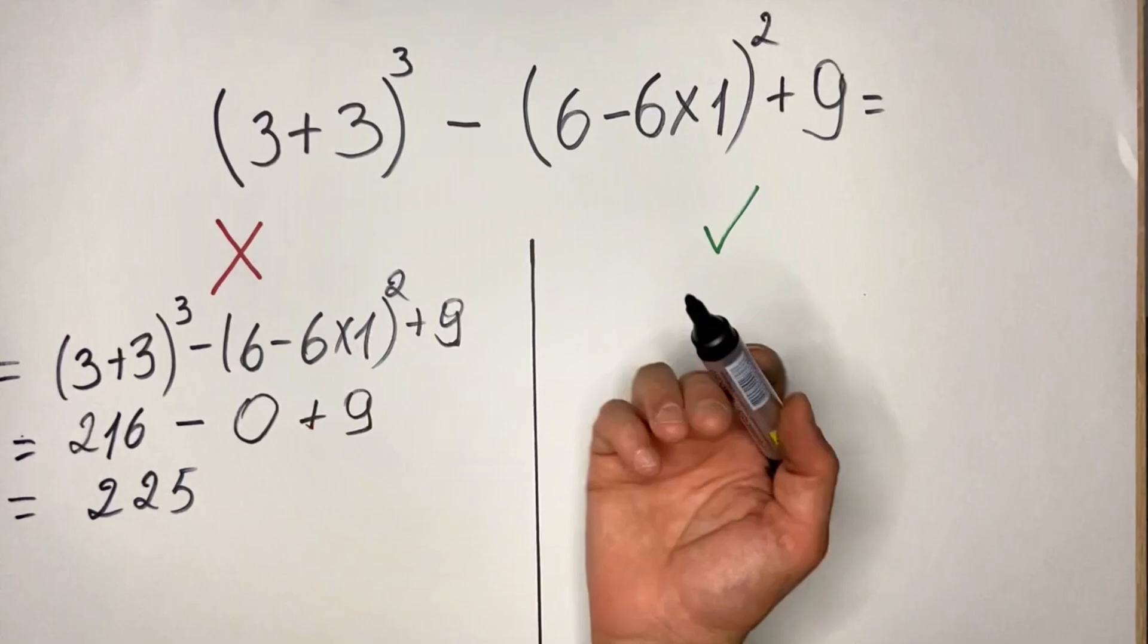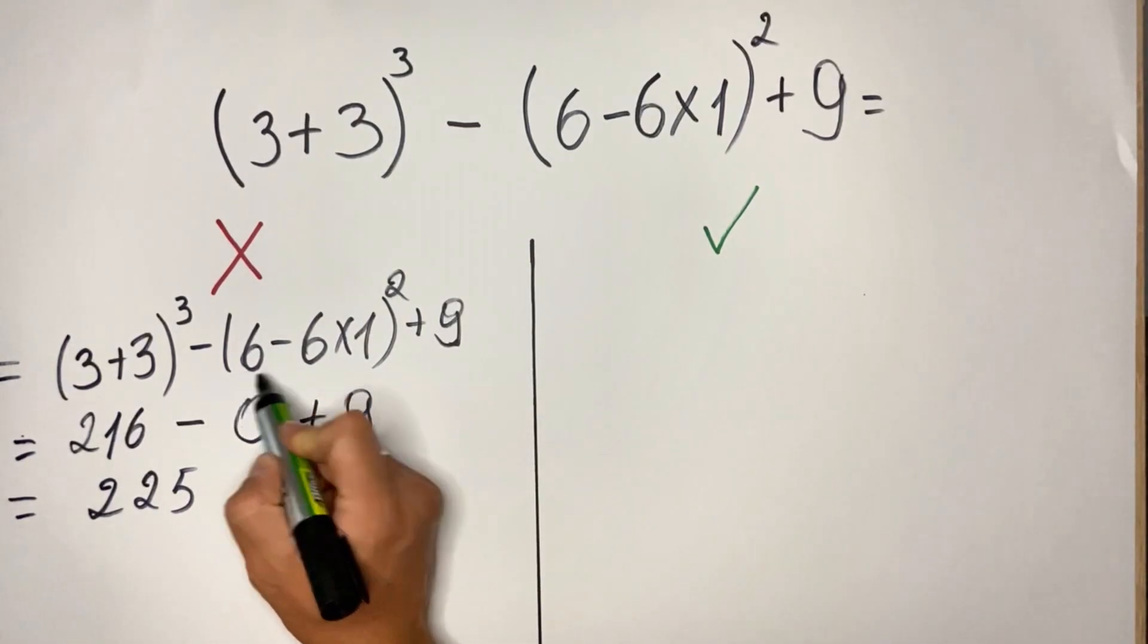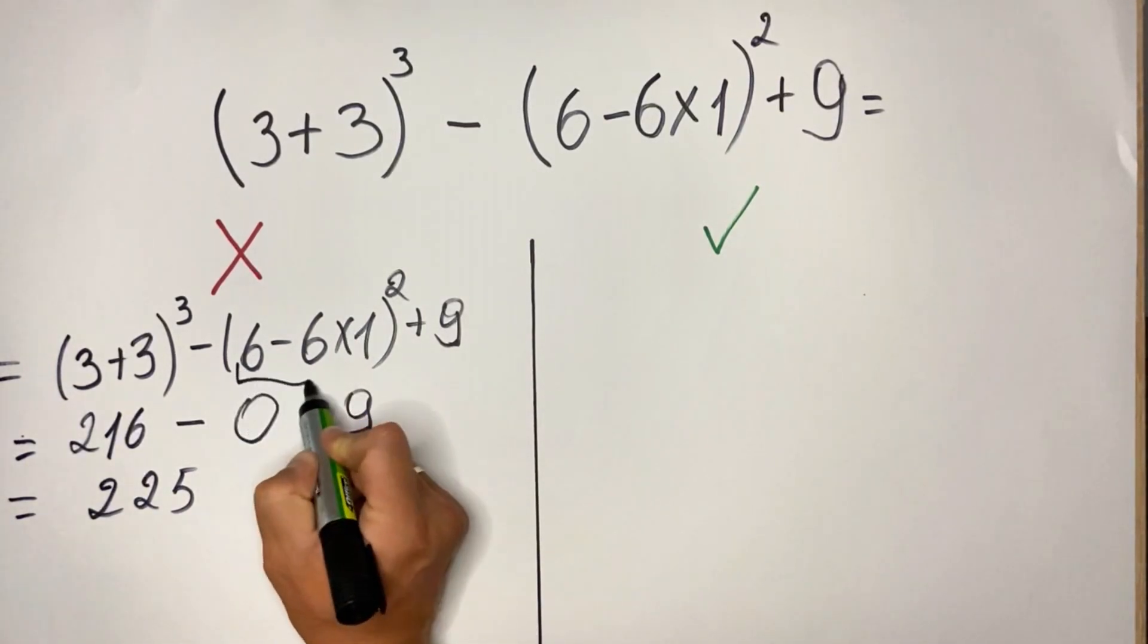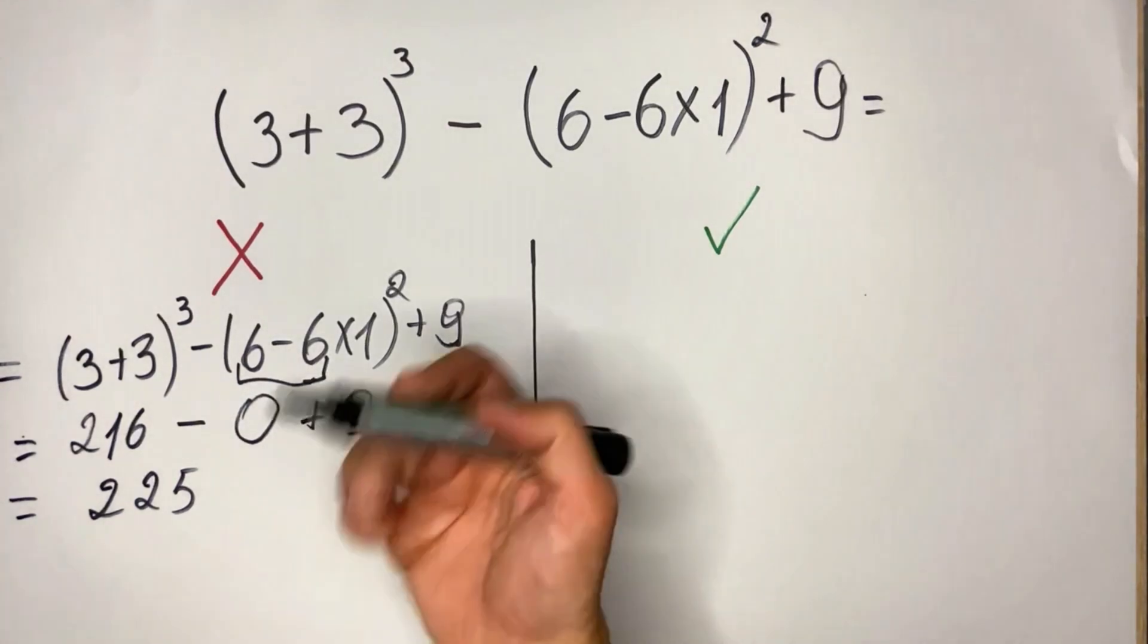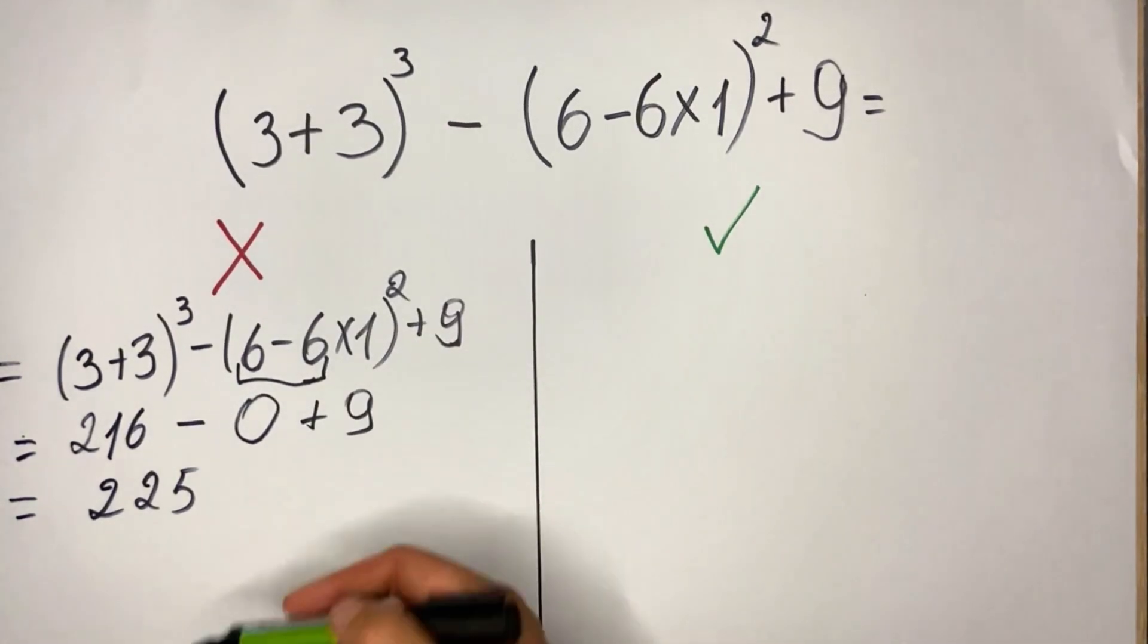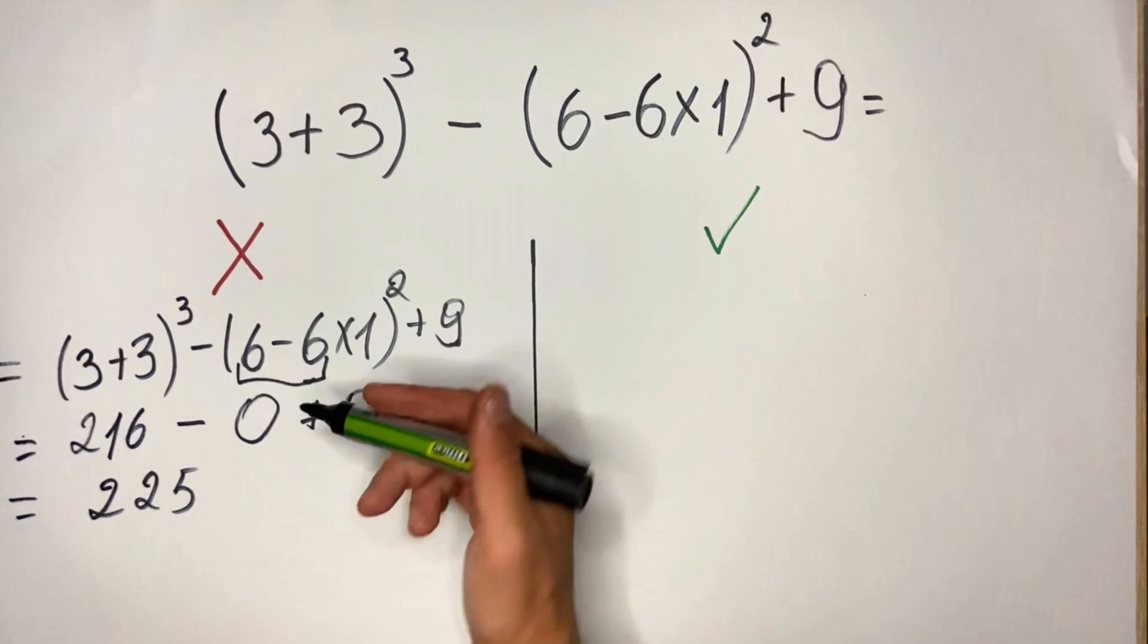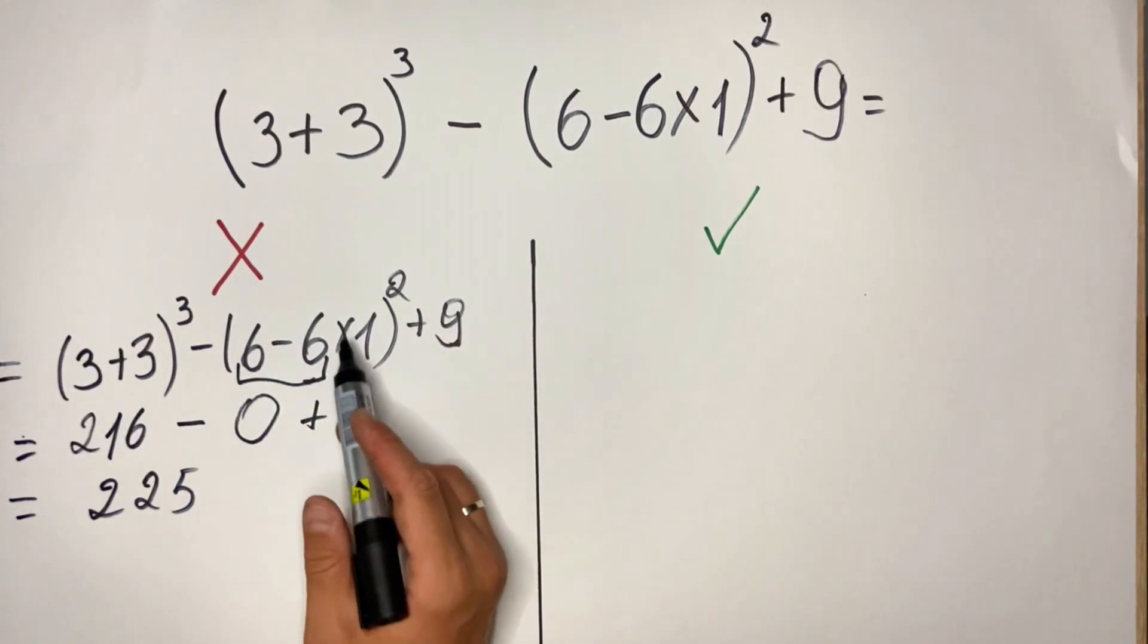So here the mistake approach would be really not following the multiplied by 1 and you do first the subtraction. Actually, that's a funny example because even if you do it in this way, still you get 0.